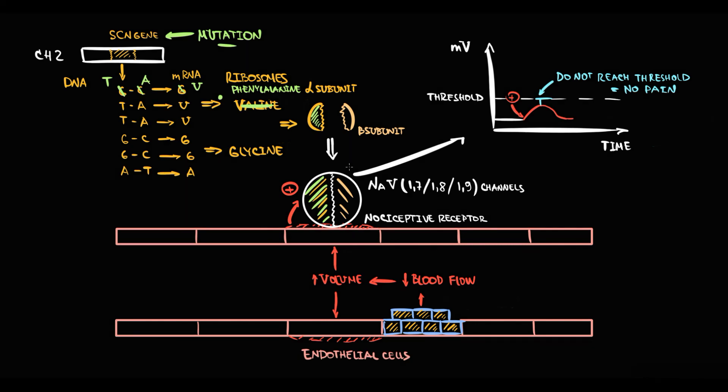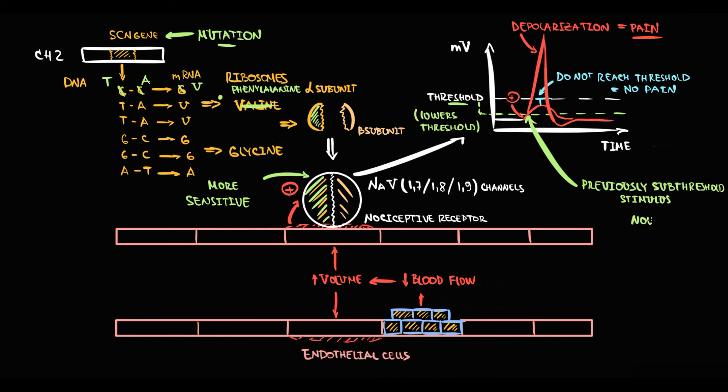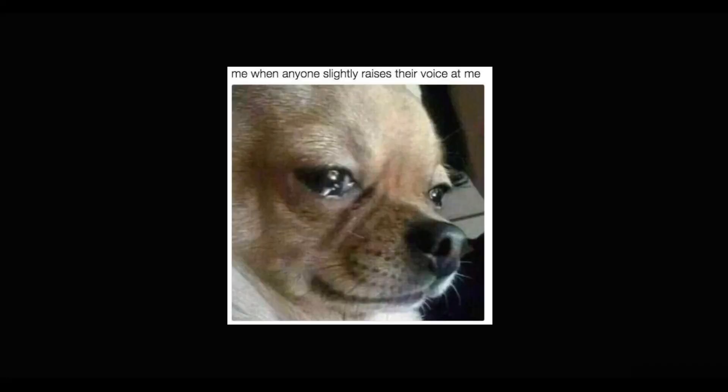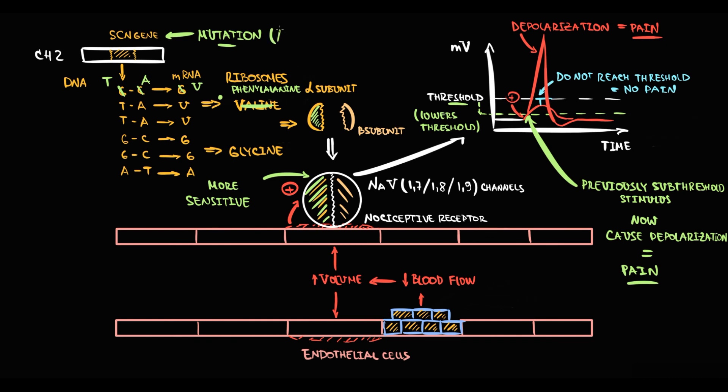The concept is that this mutation simply decreases the threshold of excitation, and this creates a huge problem. Because now even minimal stimuli will provoke pain. For example, minimal stimulus of the receptor due to vessel distension now will reach a threshold of excitation. This will cause depolarization of the receptor, and this depolarization causes pain. So basically, the receptor becomes more sensitive. Previous sub-threshold stimulation that normally just goes unnoticed now causes depolarization, and depolarization causes pain response. So the major problem in primary erythromelalgia is hypersensitivity of receptors. Interesting that such mutation is inherited as autosomal dominant trait. So erythromelalgia is an autosomal dominant neuropathy.